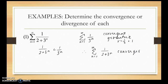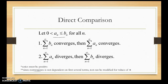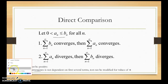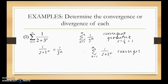Going back to the theorem: if b sub n converges — so 1 over 3^n converged — then since a sub n is less than or equal to b sub n, the smaller series converges as well. We'll call the given series a sub n and 1 over 3^n is b sub n.